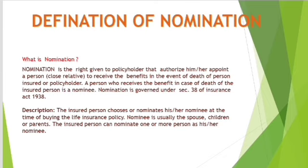The insured person chooses or nominates their nominee at the time of buying the life insurance policy. The nominee is usually the spouse, children, or parents. The insured person can nominate one or more persons in their documents as a nominee.